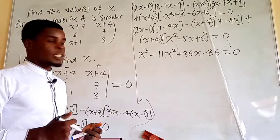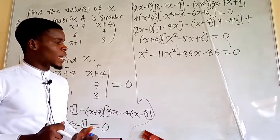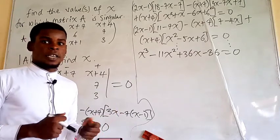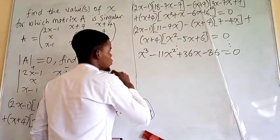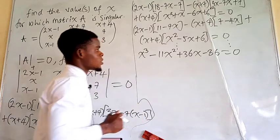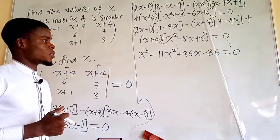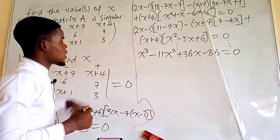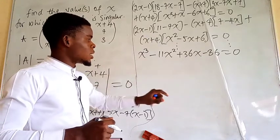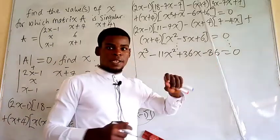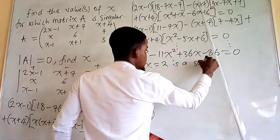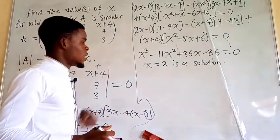We can do this using long division or synthetic division, but I'm going to apply a simpler step. We first look for a factor using the rational root method. Notice that x minus 1 is not a factor, since the coefficients don't sum to 0. But if you try x equals 2: 2 cubed is 8, minus 11 times 4 is negative 36, plus 36 times 2 is 72, minus 36 gives positive 36, so negative 36 plus 36 is 0. That means x equals 2 is a solution.